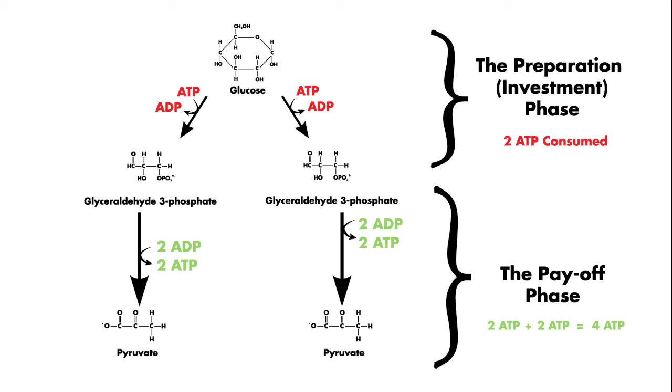Another important product of the payoff phase is the production of NADH. Each reaction from glyceraldehyde-3-phosphate to pyruvate produces one molecule of NADH, making a total of two NADH molecules from one glucose. These molecules are important because they will later lead to the production of ATP in the electron transport chain.